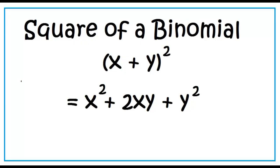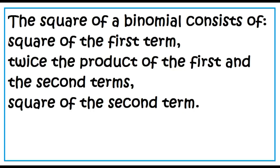The square of a binomial is of this form. The square of x plus y is equal to x squared plus 2xy plus y squared. The square of a binomial consists of: square of the first term, twice the product of the first and the second terms, and square of the second term.